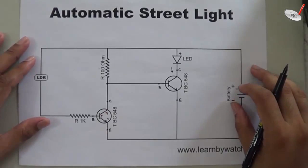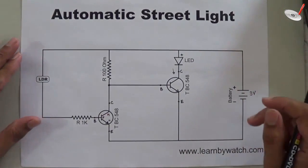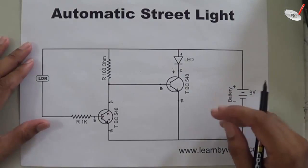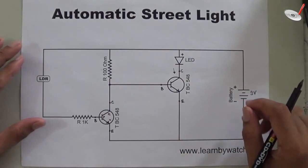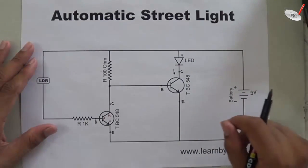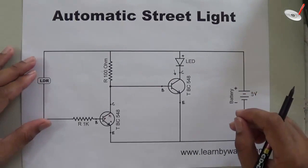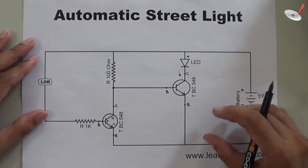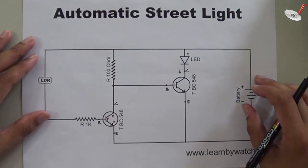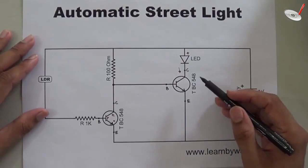Hello friends, in this video tutorial we will discuss the working of automatic street lights. I think you are all aware of automatic street lights. With the help of this circuit, the street lights turn off during daytime and turn on during nighttime. We will learn how this circuit works. Before starting, let's see what components are required to design this circuit.